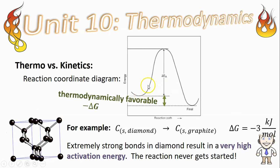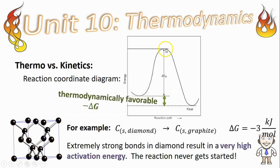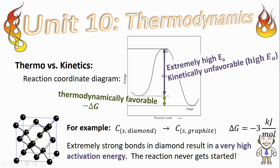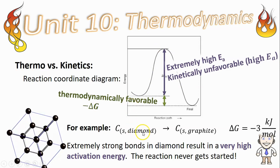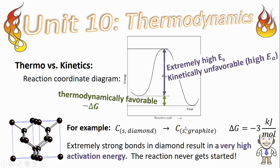You'll also notice that the energy barrier, this peak that has to be overcome, or what we call the activation energy, is extremely high, which is what's preventing a process like diamond changing to graphite from actually happening.